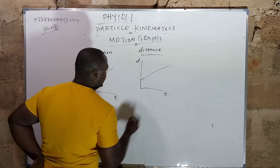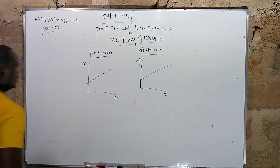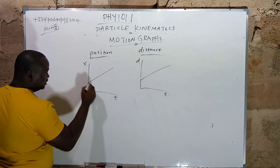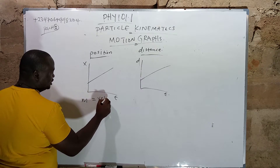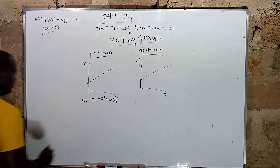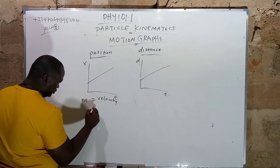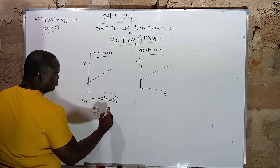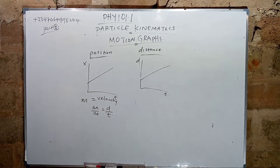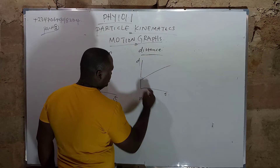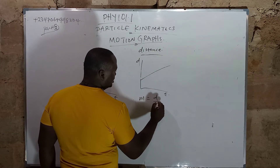Remember that the slope — as we already said in the previous video — the slope of a position-time graph should give you the velocity. Slope involves this division: we have changing S all over changing T, which is displacement all over time. While the slope of the distance-time graph is distance all over time.